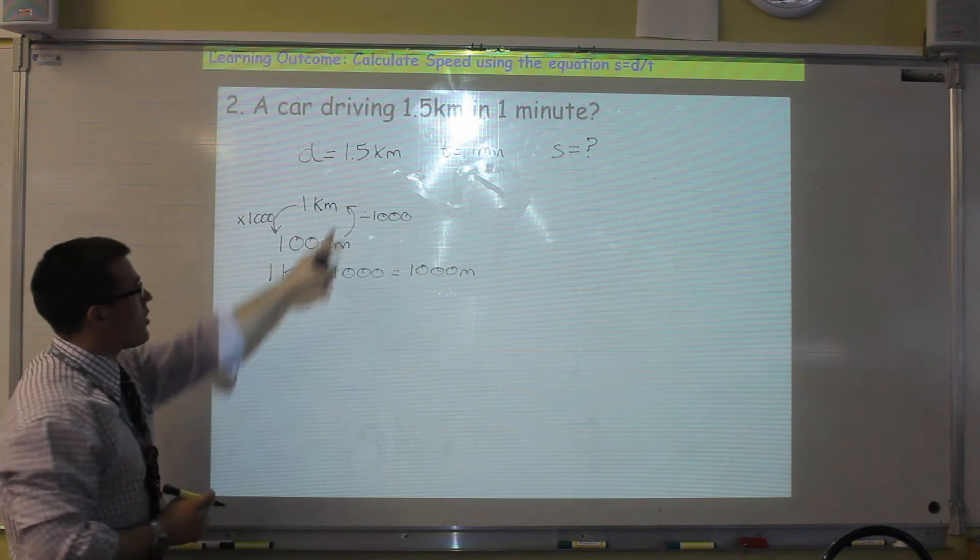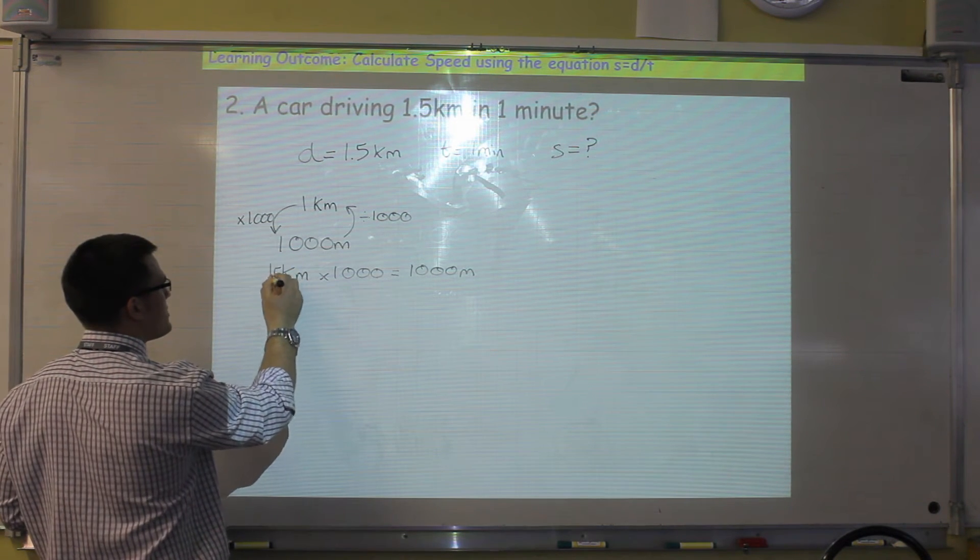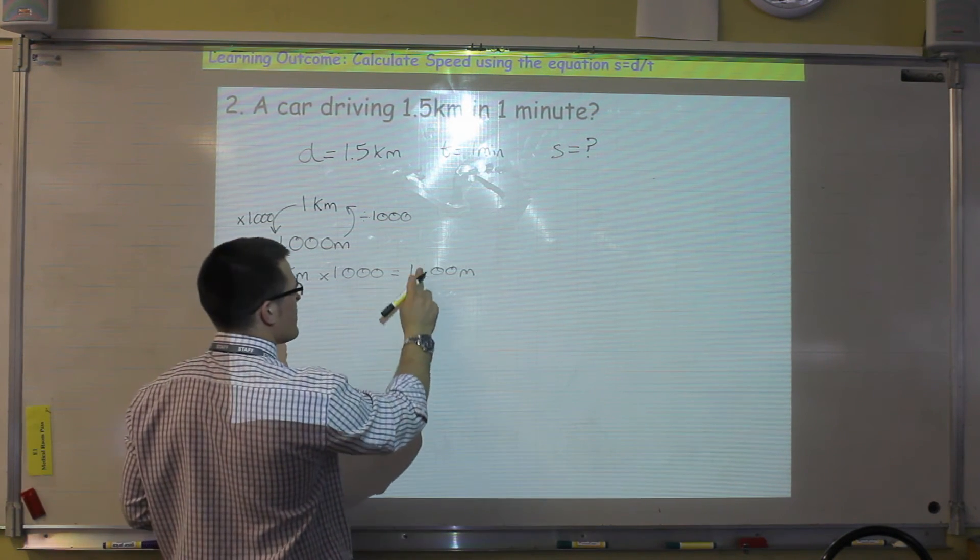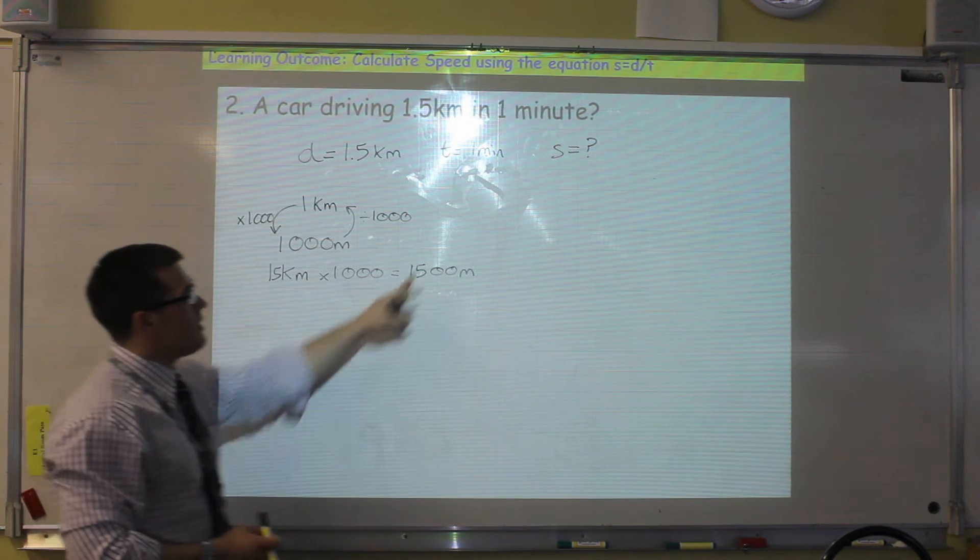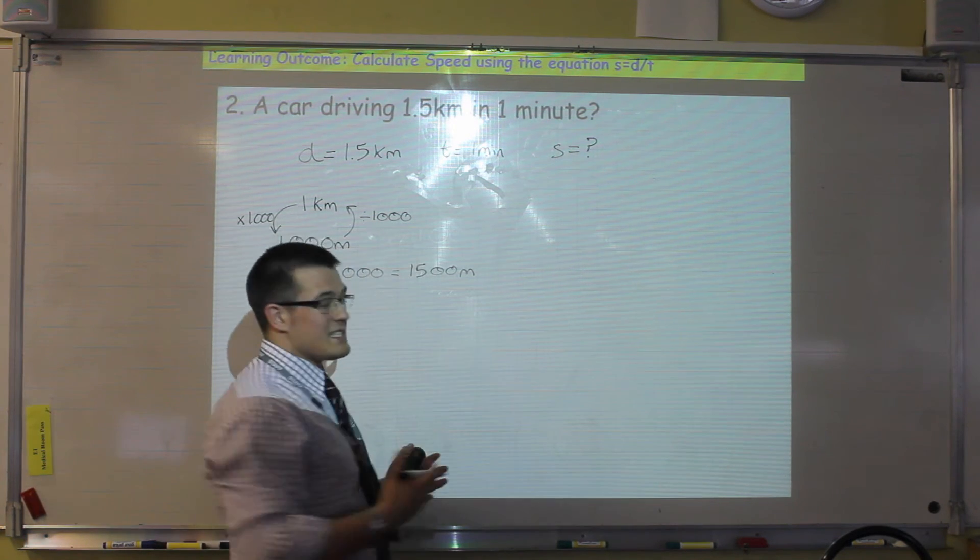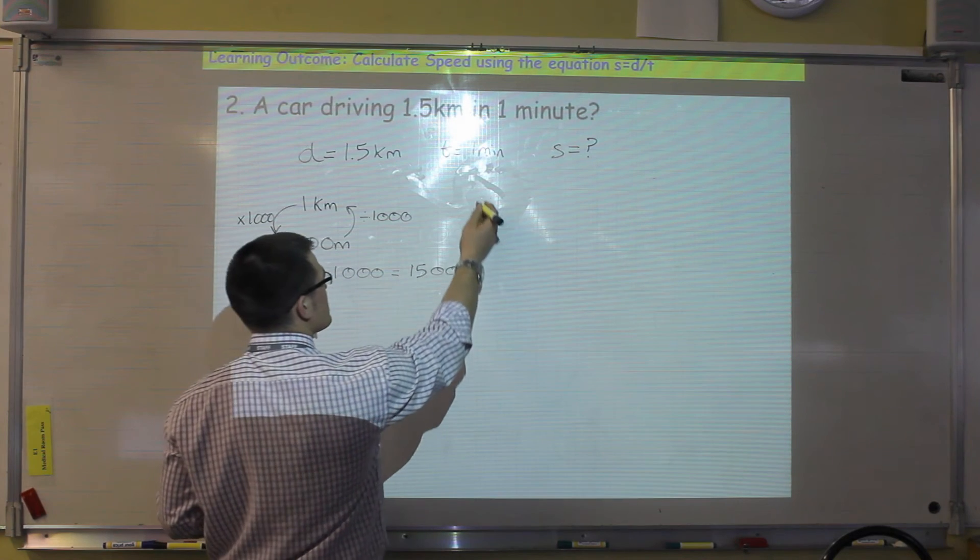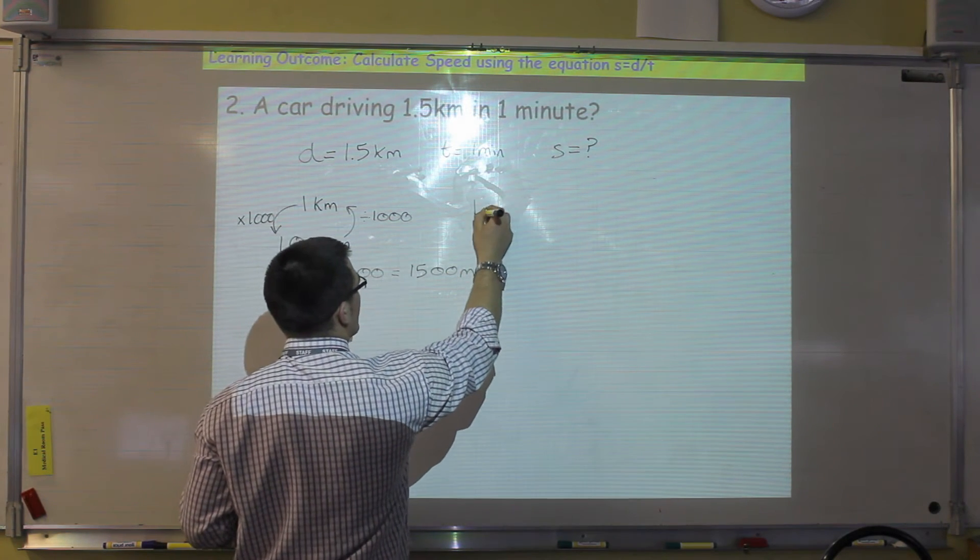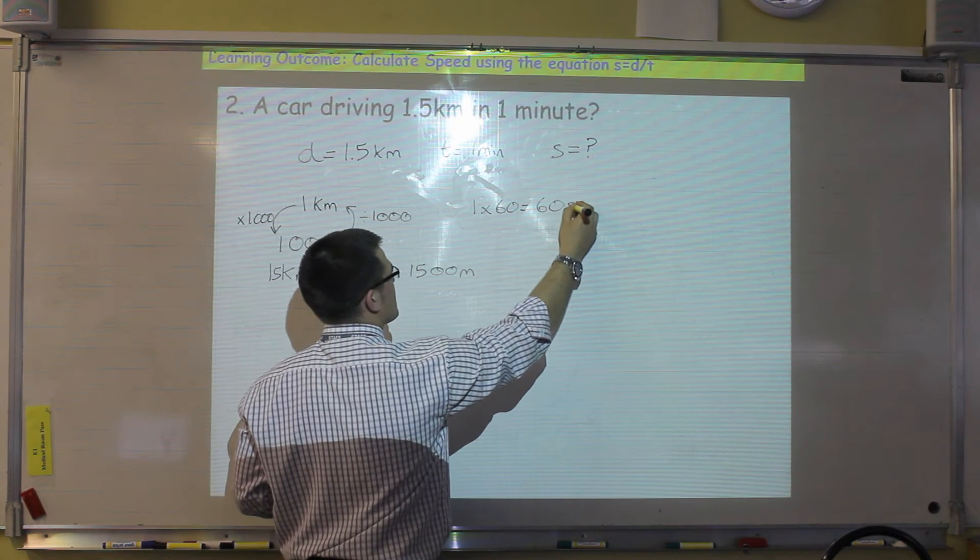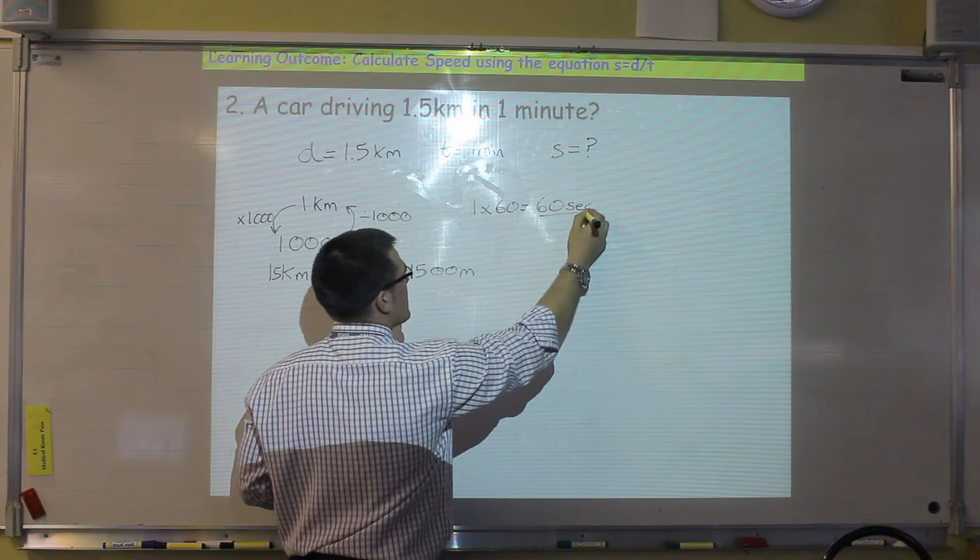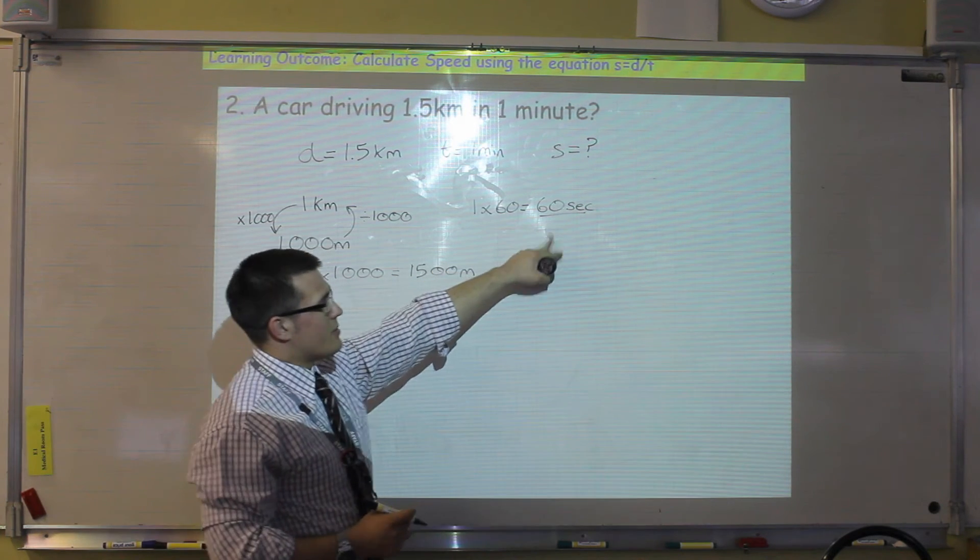And in the example we've got, we have one point five kilometers. So one point five kilometers times a thousand, will give me one thousand five hundred meters. In one minute, there are sixty seconds. So we're going to do a similar thing, to go from minutes to seconds, we multiply by sixty. So one times sixty will give me sixty seconds. So we now have our distance in meters, and our time in seconds.